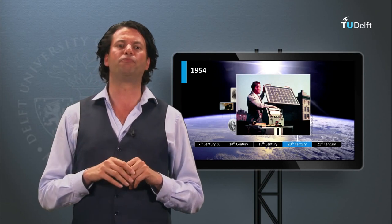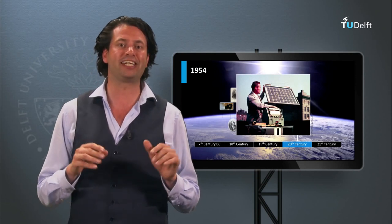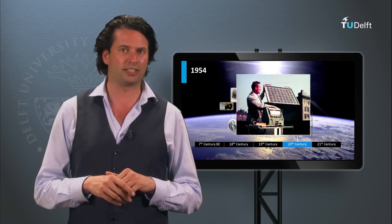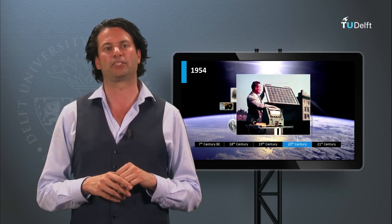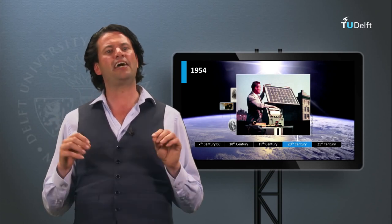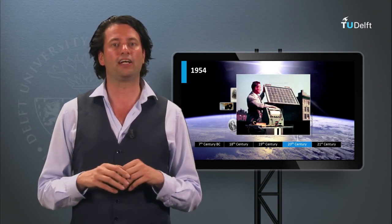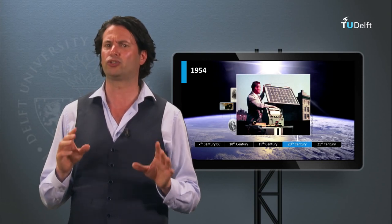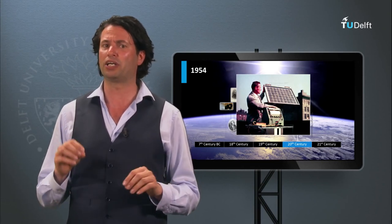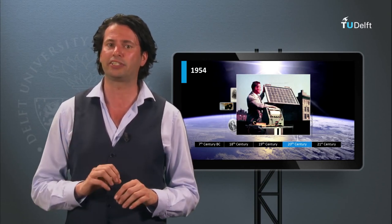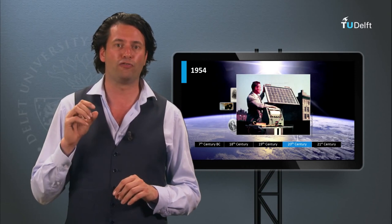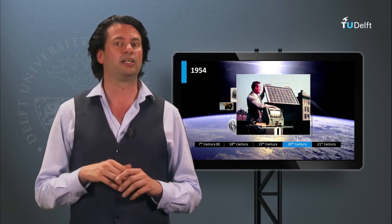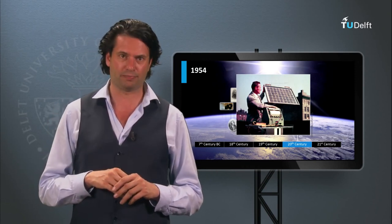The real development of modern photovoltaic devices as we know them today started at Bell Labs. In 1954 Bell Telephone Laboratories produced a silicon solar cell with a light-to-electricity conversion efficiency of 4%, and they later achieved 11%.